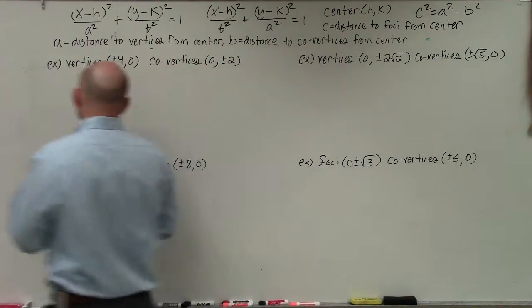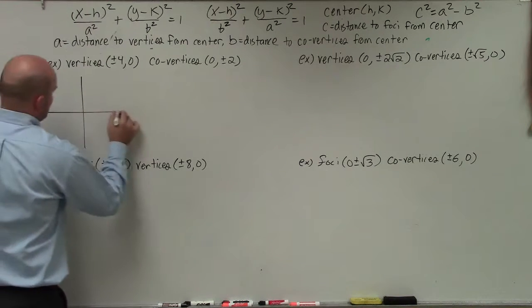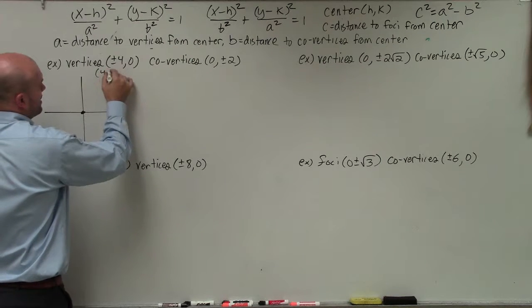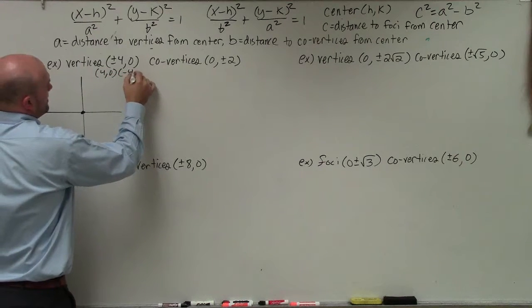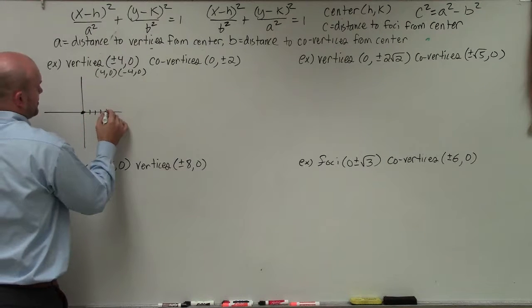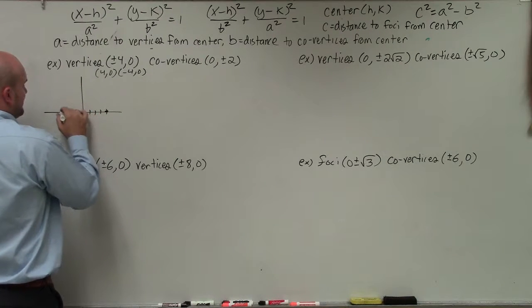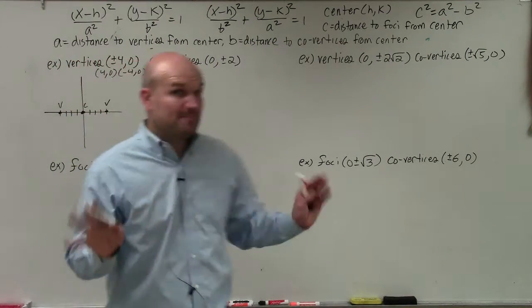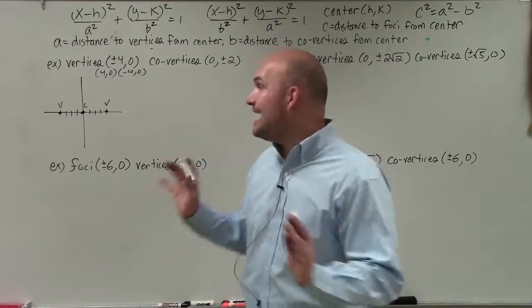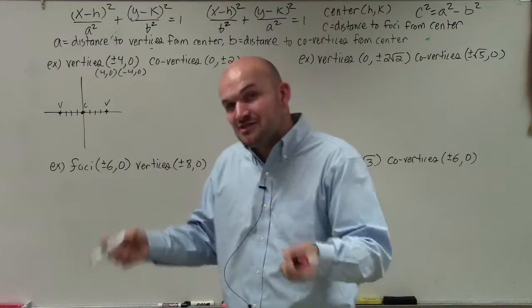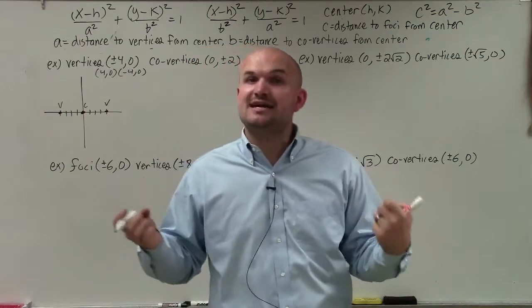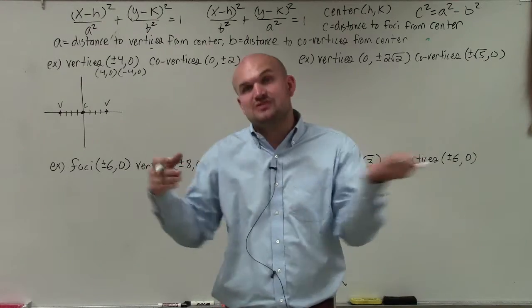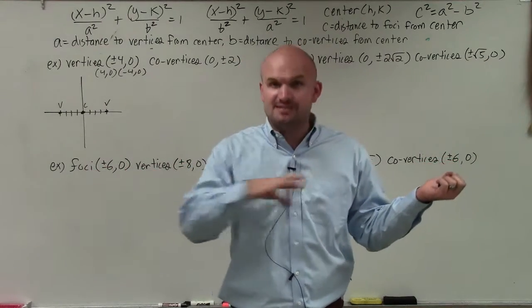The first thing we're going to do is plot the information we know. Plus or minus 4,0 can be rewritten as (4,0) and (-4,0). So I go over 4 in each direction — those are my two vertices, and there's my center. Just by plotting the first piece of information, I have two vertices. Looking at the ellipse, we know the major axis is horizontal, because the vertices are the endpoints of the major axis.